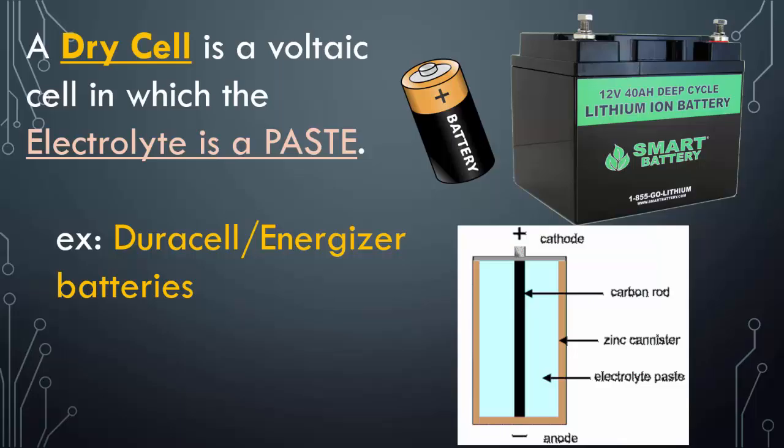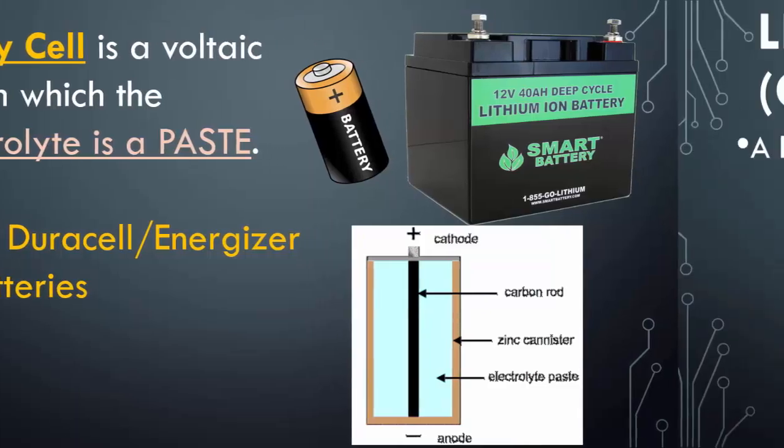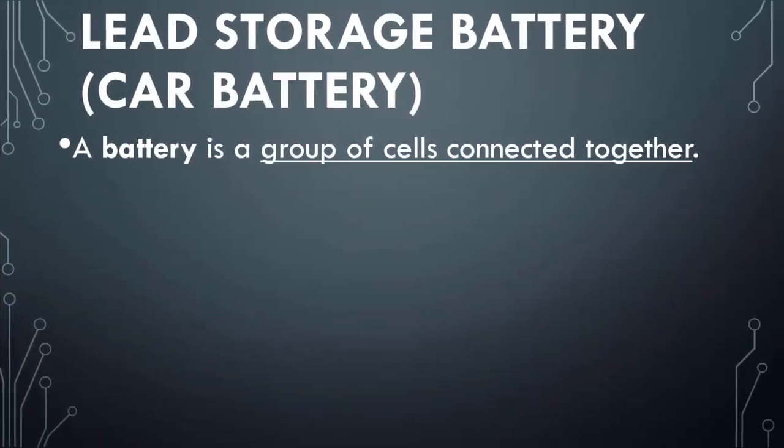It only allows current flow if we connect the circuit — the anode end and the cathode end have to be connected as well. Batteries are simply a group of cells connected together.